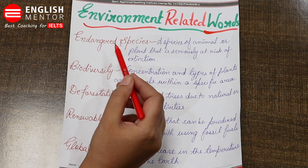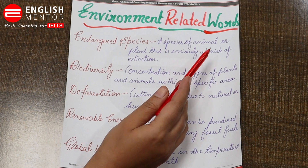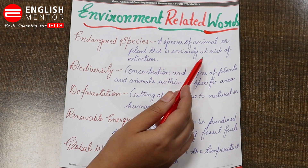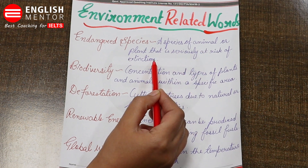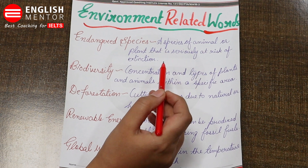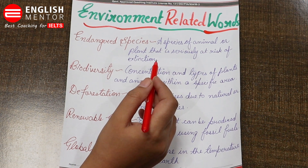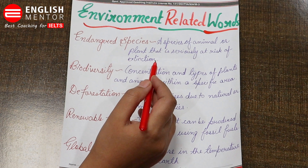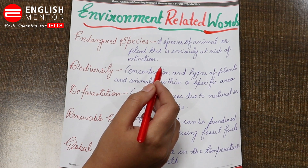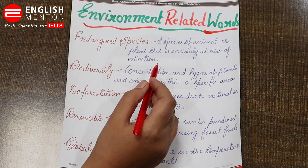The first word is 'endangered species' — a species of animal or plant that is seriously at risk of extinction. It refers to species that are about to die, about to disappear. So we can use this word.